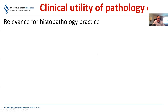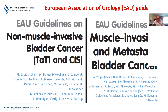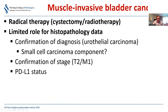Moving to the clinical utility of pathology data: the main clinical guidelines in Europe are from the European Association of Urology, with separate guidelines for non-muscle invasive and muscle invasive disease. When urologists talk about muscle, they mean detrusor muscle - they don't recognize muscularis mucosae. So non-muscle invasive means Ta or T1, and muscle invasive is T2 and above.